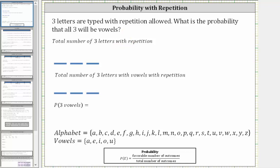Because there are 26 letters in the alphabet, there are 26 ways to type the first letter, 26 ways to type the second letter, and 26 ways to type the third letter. Therefore there are 26 times 26 times 26, or 26 cubed ways of typing three letters with repetition allowed. 26 cubed is equal to 17,576.